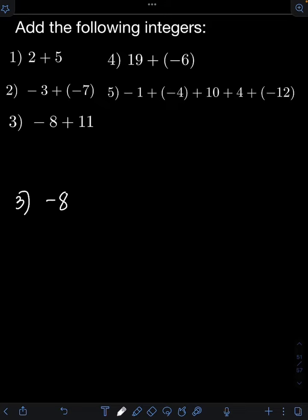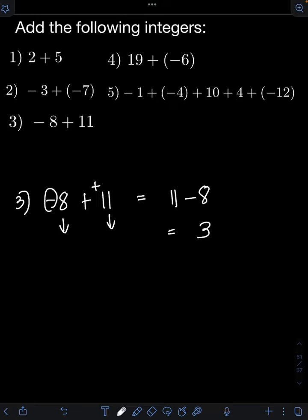For number 3, we have negative 8 plus 11. So this time we are adding unlike signs — one negative and one positive. So if that's the case, we subtract the smaller absolute value, which is 8, from the bigger absolute value, which is 11, disregarding the signs. And then we will have 11 minus 8, or 3. But on the final answer, we must put the same sign of the number that has the bigger absolute value — in this case, positive 11. So the final answer should be positive 3, or simply 3.